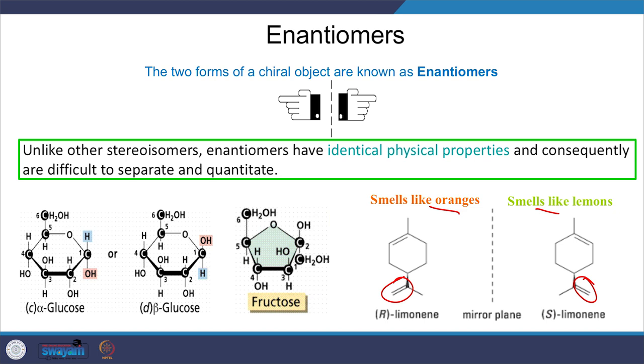Enantiomers give optical rotation — they can rotate the plane of polarization of plane-polarized light. Let us connect it all: we are talking about circular dichroism, which is about having different absorptions for different polarizations. Because of these different absorptions, what you have is a rotation of the plane of polarization — and this is due to chiral molecules. These sets of chiral molecules, enantiomers, can rotate the plane of polarization of light.